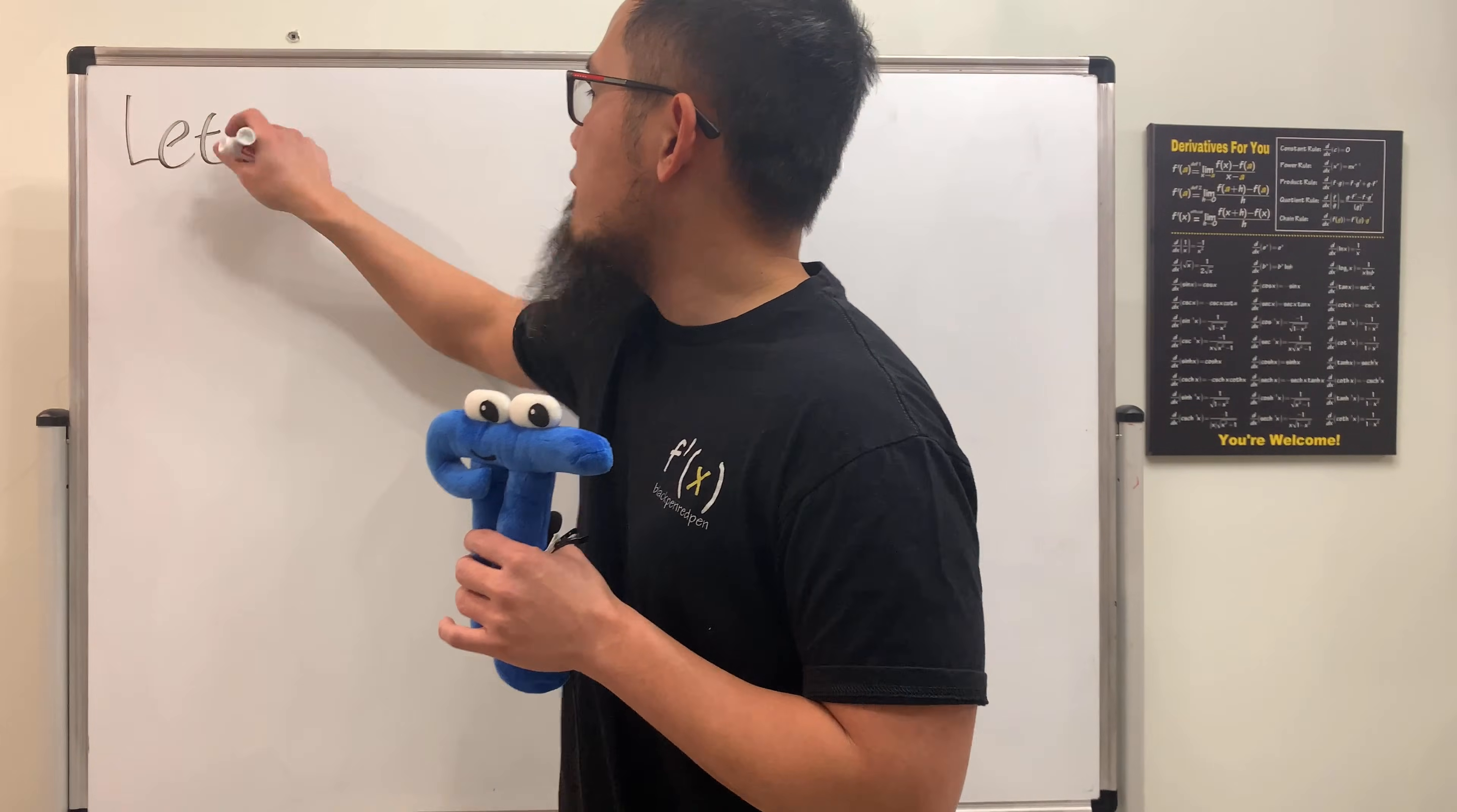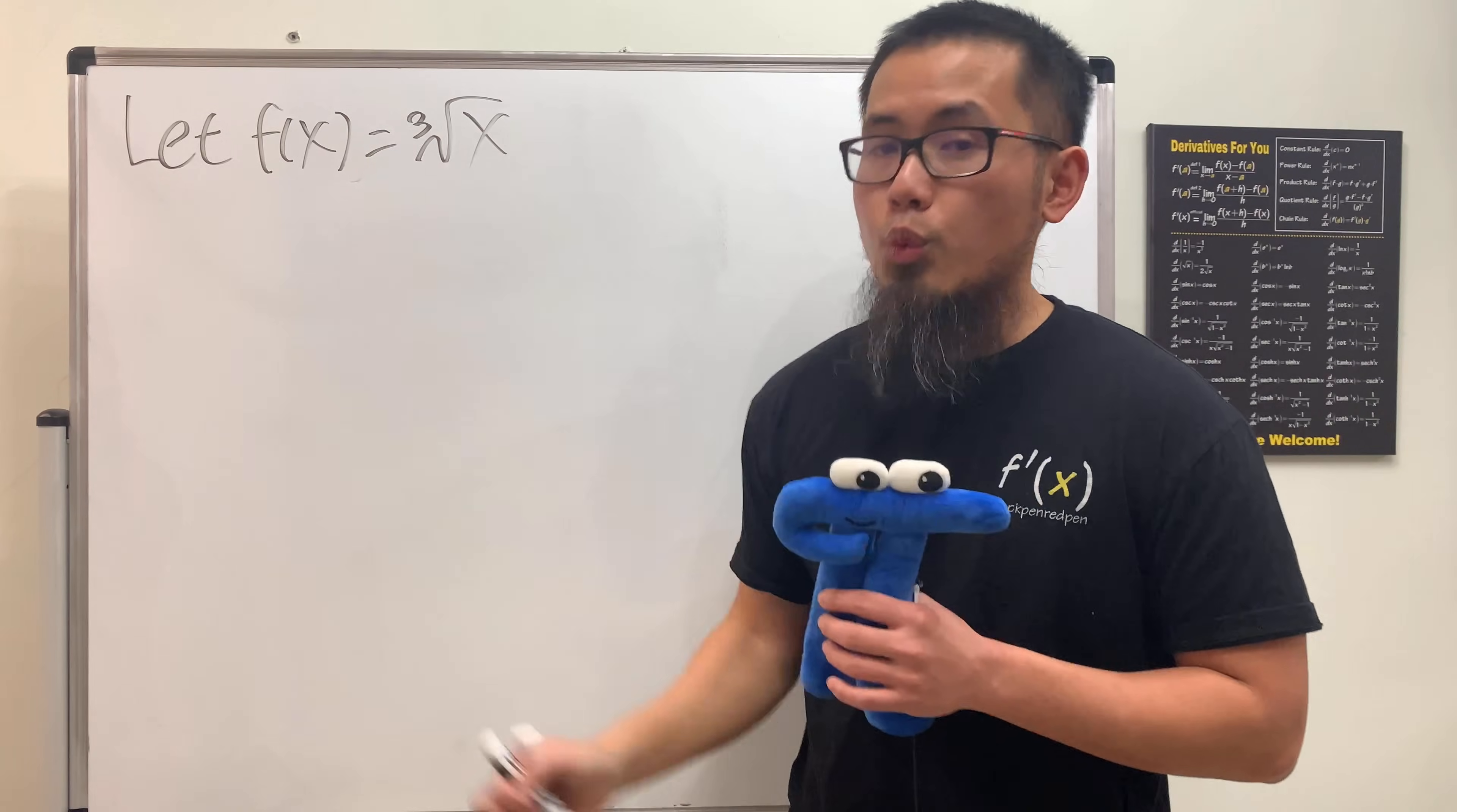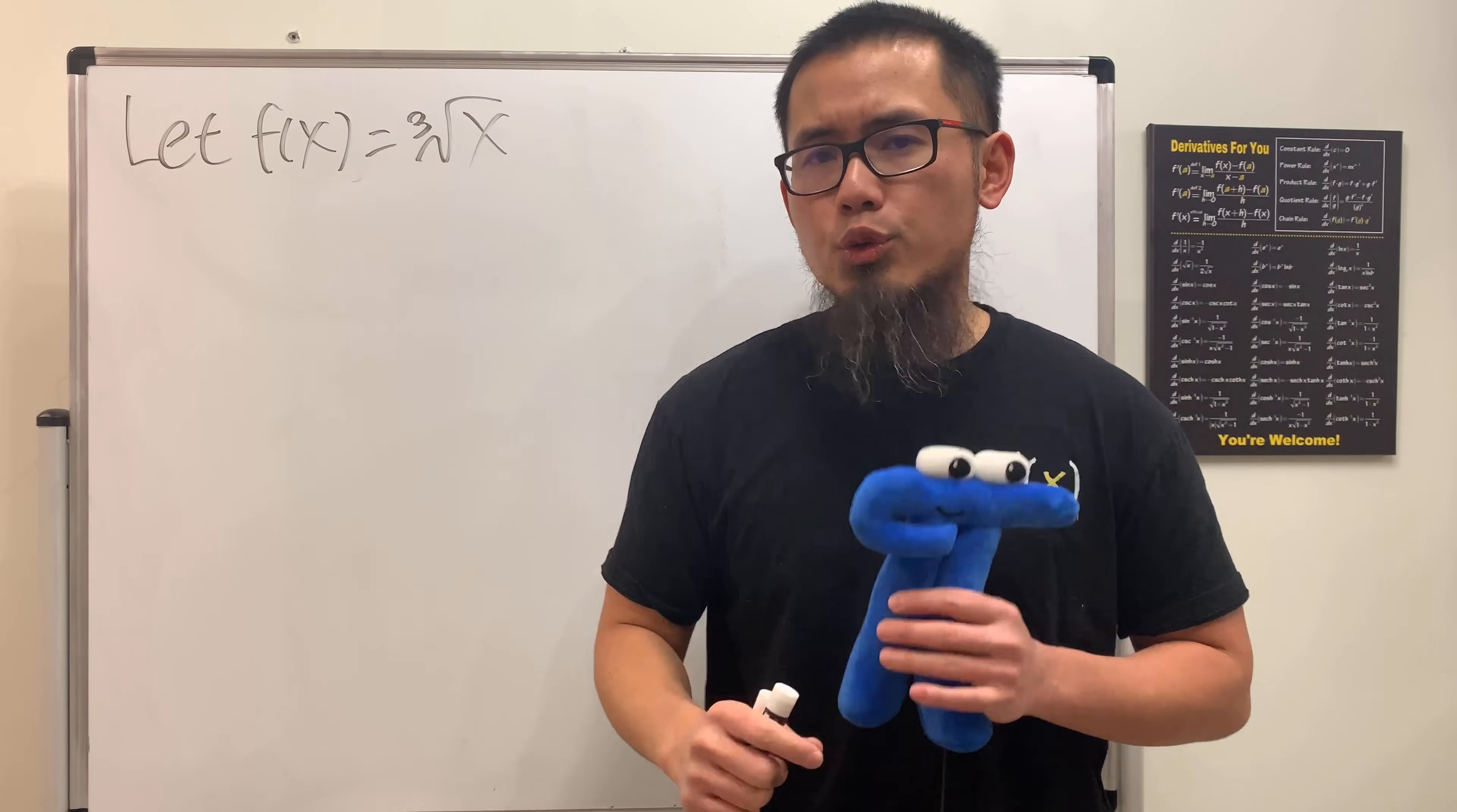We have a function f of x is equal to the cube root of x, and we have to find the derivative of this function when x is equal to negative 1, but you're not allowed to use the power rule.